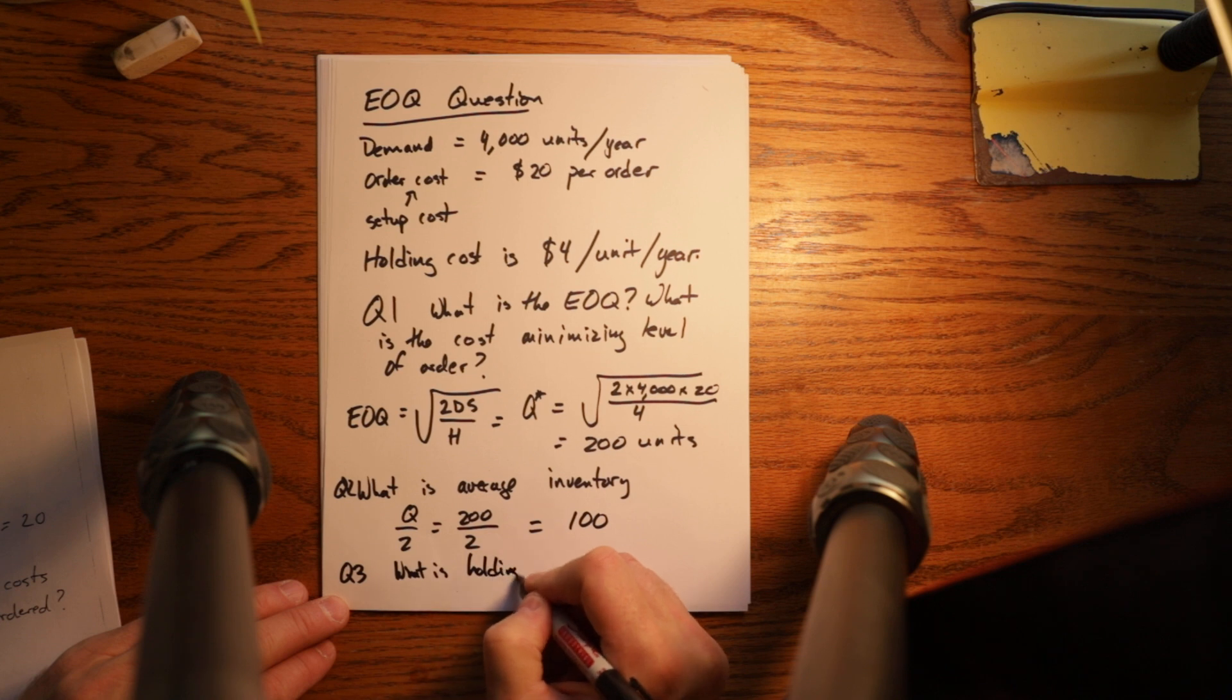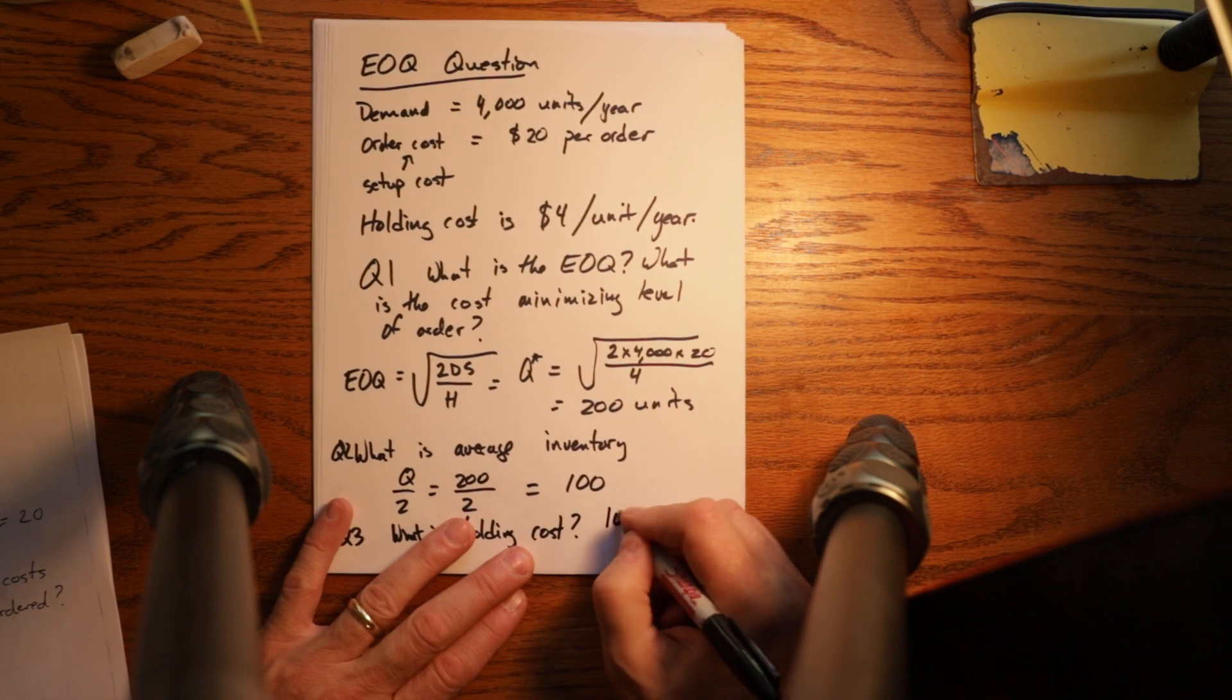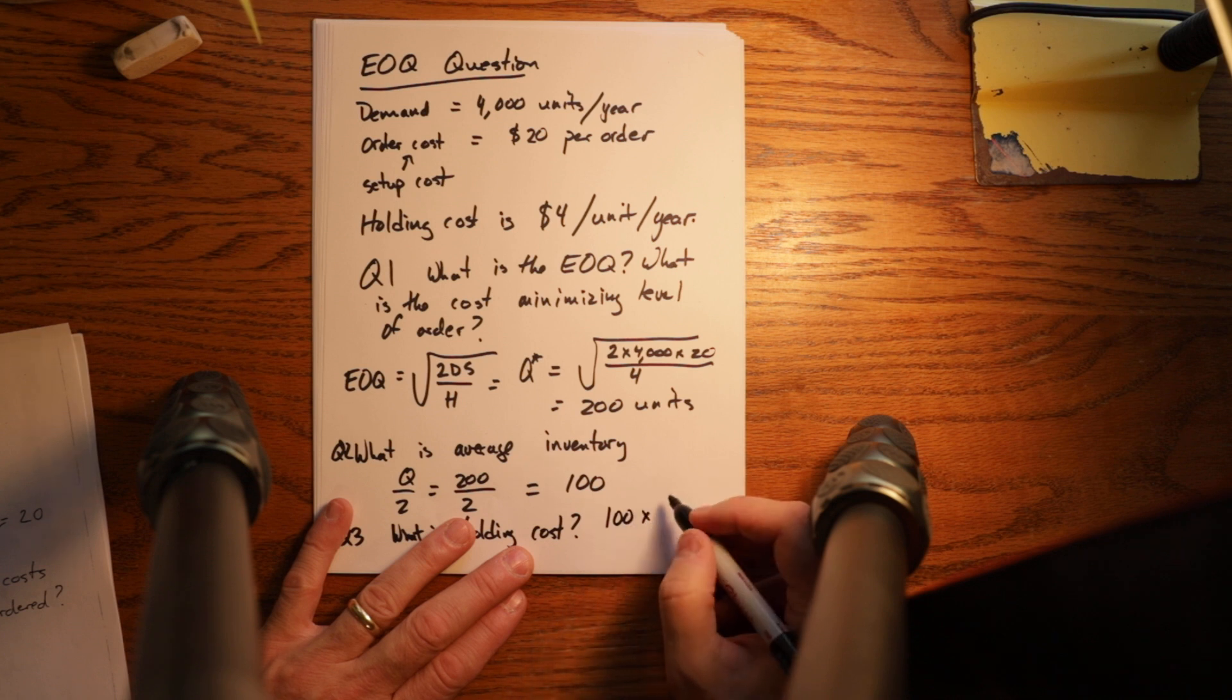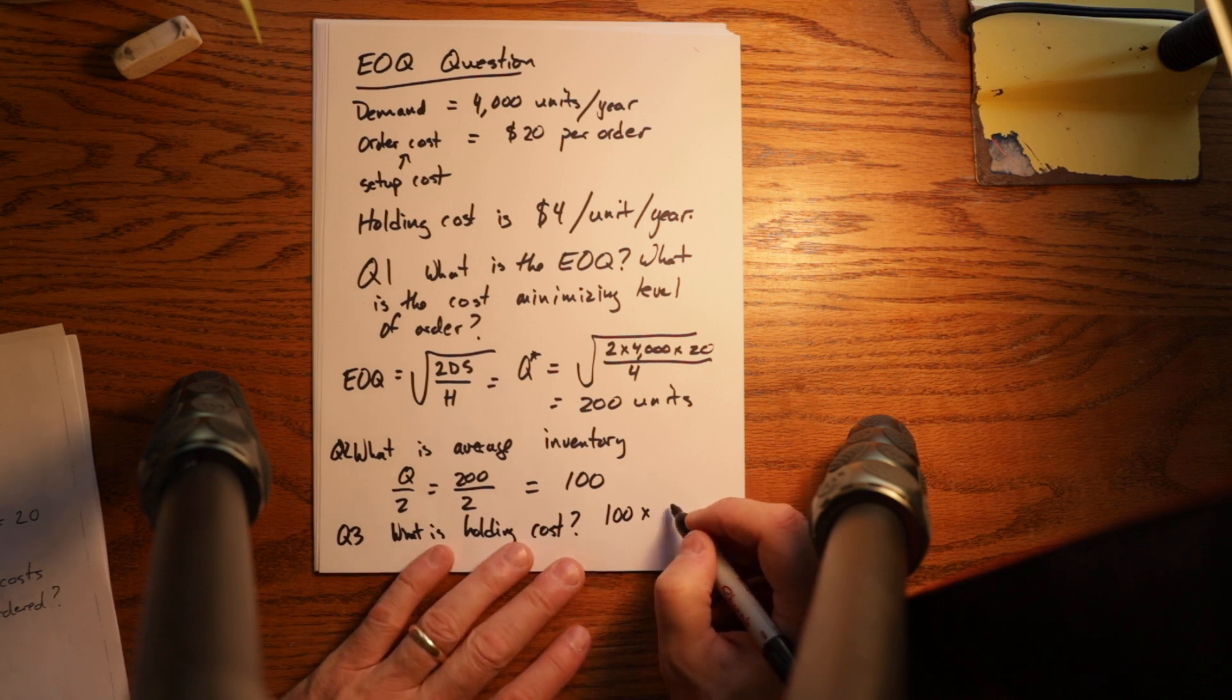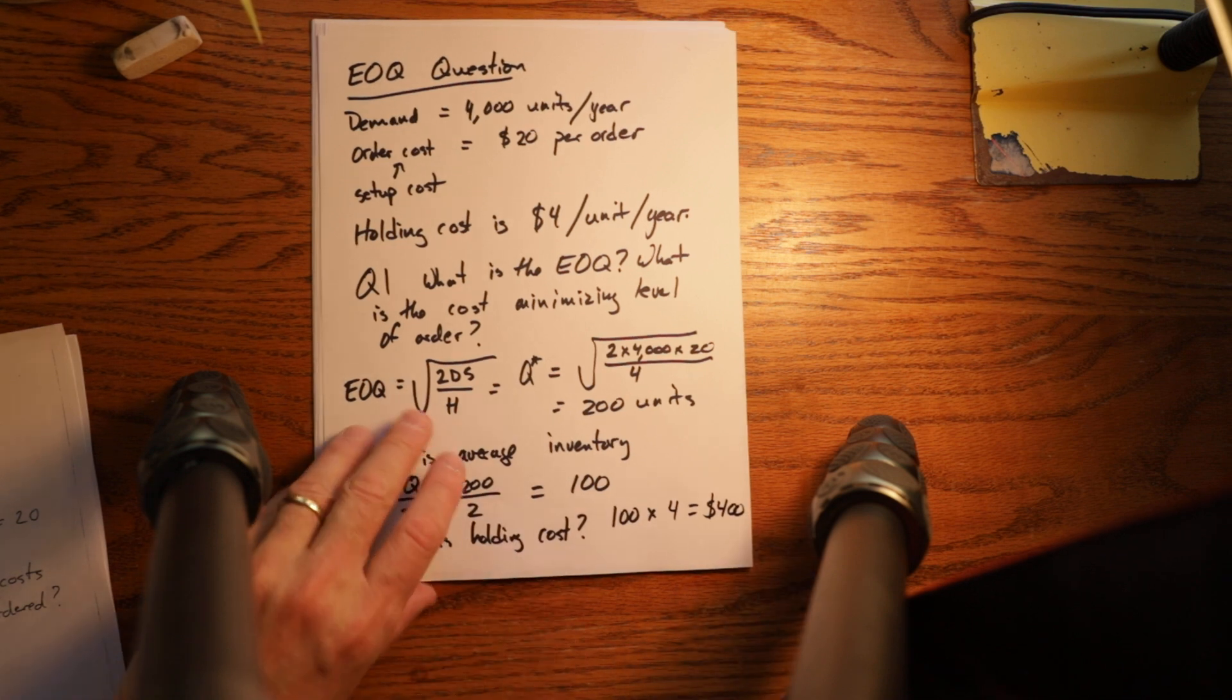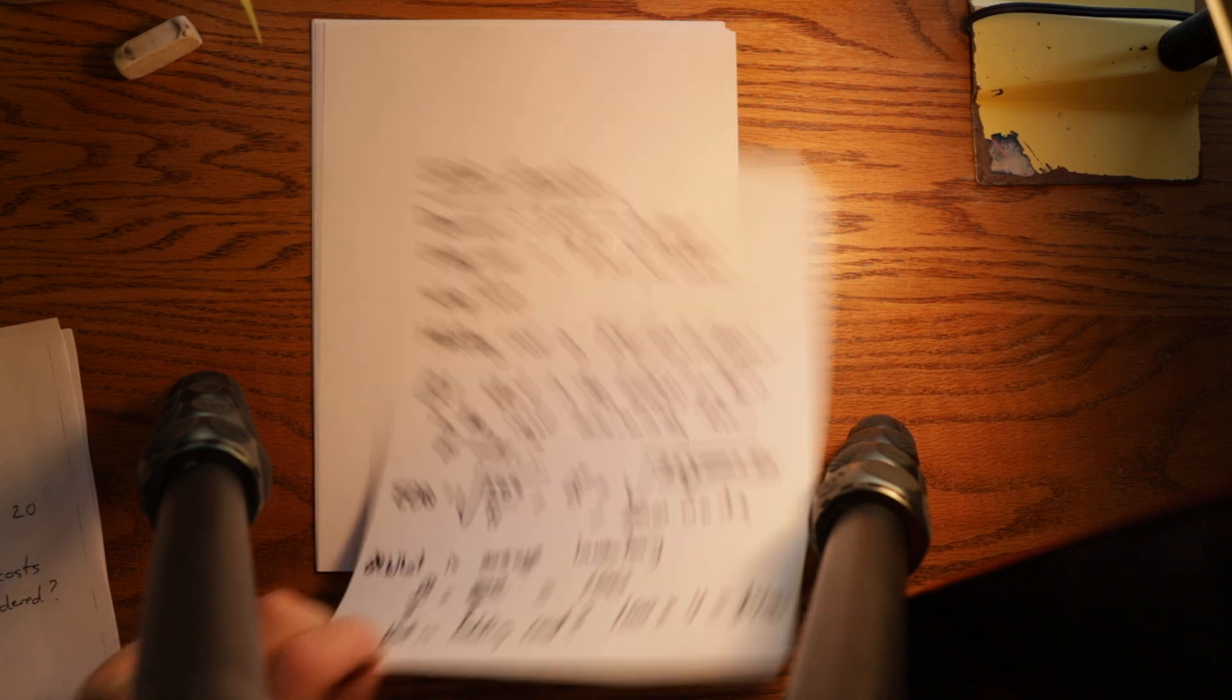So what is holding cost? It's equal to average inventory times holding cost which was 4, so equals $400. So your holding cost for that ordering policy is $400.